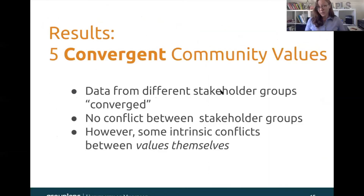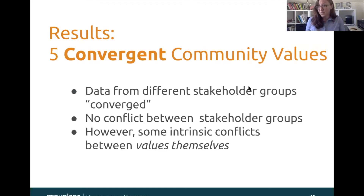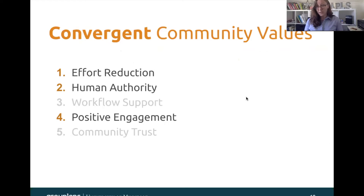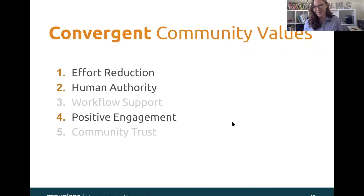The results were that we had five convergent community values. By convergent, I mean that different stakeholder groups could have had very different values — however, this isn't what our data suggested. We didn't find much conflict at all between stakeholder groups, though there were some intrinsic conflicts between the values themselves. The five values that emerged are effort reduction, human authority, and positive engagement — which I'll discuss — as well as workflow support and community trust, which I encourage you to check out in the paper.